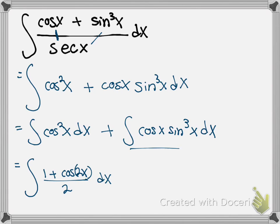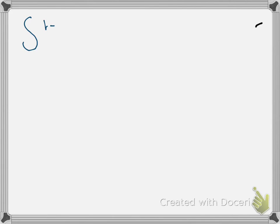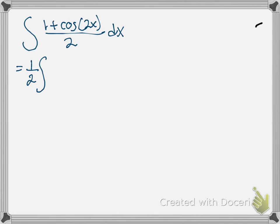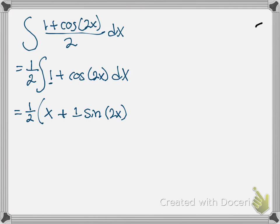Let me finish that first integration. We have the integral of (1 plus cosine of 2x) divided by 2 dx. Taking out the 1/2 as a constant multiple, this becomes 1/2 times the integral of 1 plus cosine of 2x dx. That gives us 1/2 times x plus sine of 2x divided by 2, plus c.